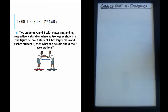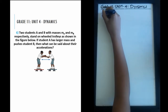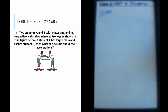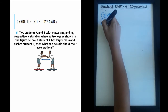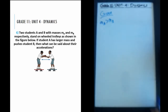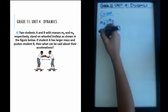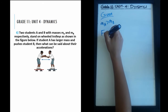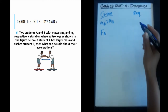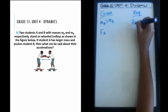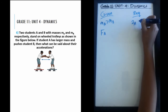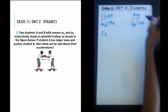Let's write down what we are given. We have the mass of student A and the mass of student B, and specifically we know that the mass of student A is larger than the mass of student B. We also know that student A pushes student B. What we're required to find is the relationship between acceleration A and acceleration B — are they equal, are they opposite?